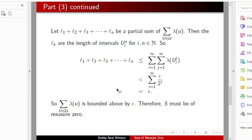Let ℓ_1 through ℓ_m be a partial sum of this infinite sum. Then the ℓ_k are the lengths of intervals U_i^n for i, n in N.